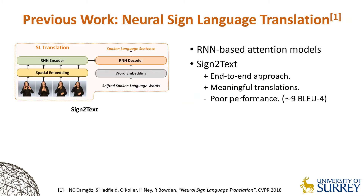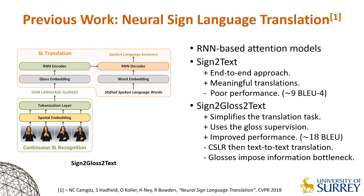In our previous work, Neural Sign Language Translation, we used RNN-based attention techniques and investigated different translation setups. Sign2Text was the first end-to-end approach where the spoken language sentences were directly translated from continuous videos. Although it was able to produce meaningful translations, the overall performance was quite poor. To address this, we introduced a sign-to-gloss-to-text approach, where we divided the translation task into two steps.